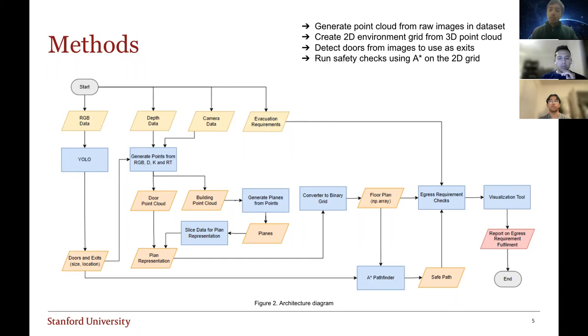Finally, we run safety checks using A-star on this 2D grid map with the goal of navigating to these exits, and in the meantime, also passing any egress checks that we will talk about.